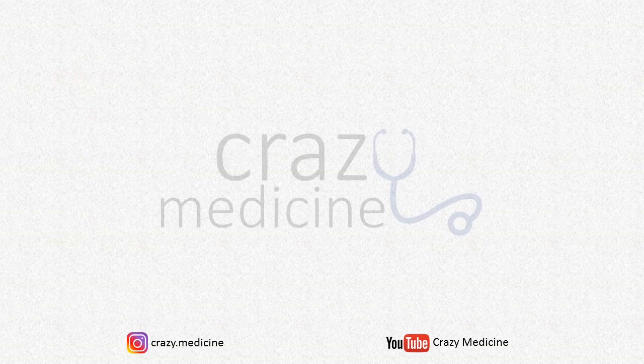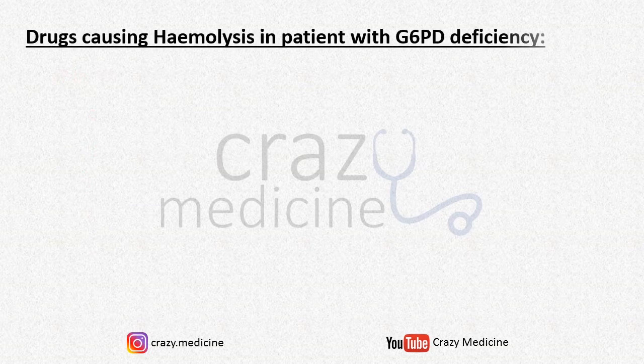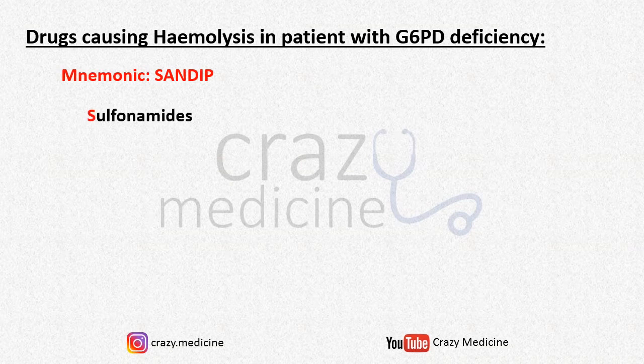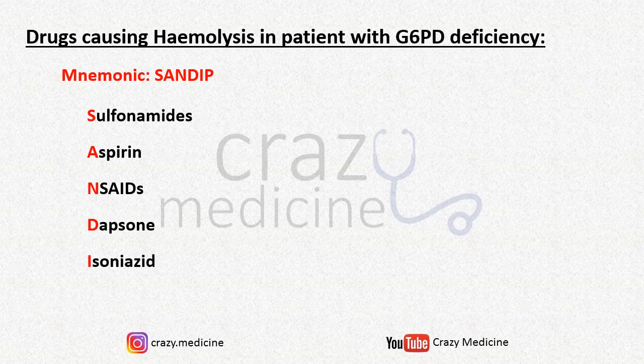Next is drugs causing hemolysis in patients with G6PD deficiency anemia. The mnemonic is SANDIP: S stands for sulfonamides, A stands for aspirin, N stands for NSAIDs, D stands for Dapsone, I stands for isoniazid, and P stands for primaquine.